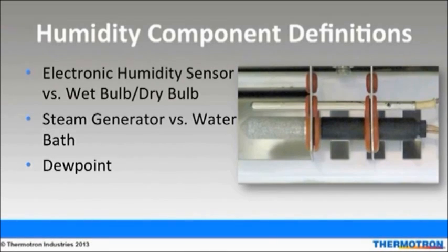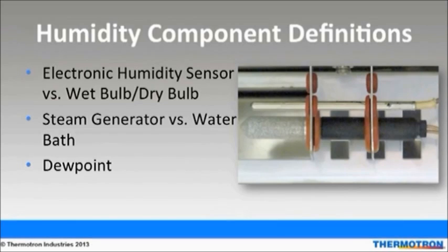A wet bulb-dry bulb system can require frequent replacement of wick socks, and the dirty water from the test can clog the humidity system. The steam generator produces high volumes of moisture and water vapor consistency, which is good for transitions. The water bath system can't generate high volumes of moisture and has poor low humidity control due to the water in the bath; however, it is good for steady state testing. The dew point is the temperature to which air must be cooled for it to reach saturation.